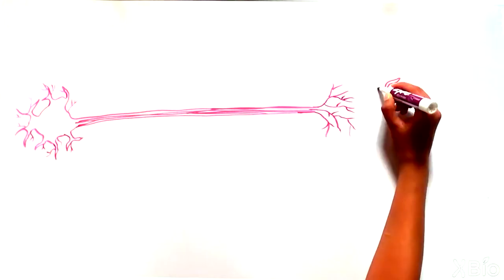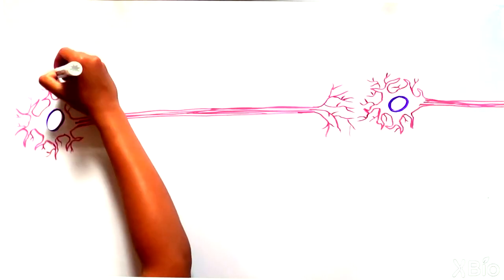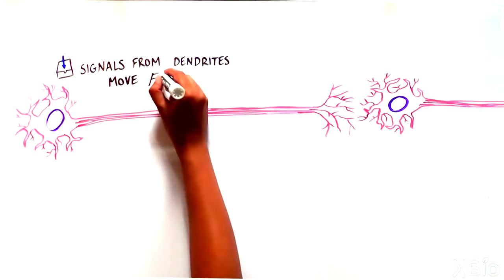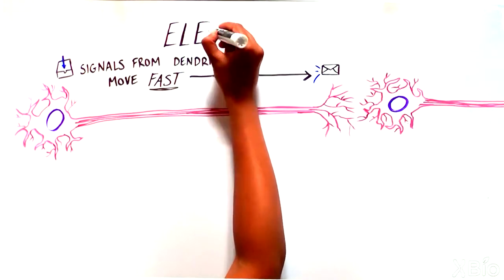Lastly, the axon is a longer, less branched projection from the cell body, from which the neuron sends outgoing signals to other cells. But how exactly does a signal received by dendrites travel all the way down a long axon so fast?